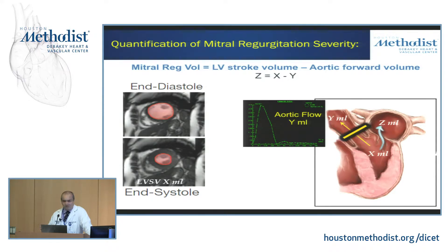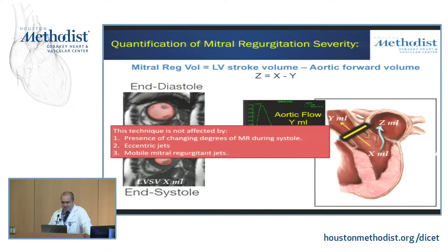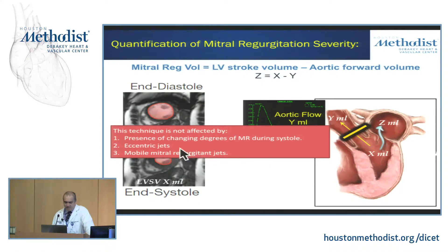The way we compute mitral regurgitation is simply: the amount of blood the ventricle ejects out minus the amount going forward equals the amount going backward. Obviously if there's an intracardiac shunt such as a VSD that complicates things, but in the absence of a shunt this is the basic methodology. This is the preferred way to assess mitral regurgitation. The advantage is that since it's purely volumetric-based, it doesn't matter if the degree of mitral regurgitation changes throughout the cardiac cycle, if the jet is very eccentric, or if you've got multiple jets — it gives you an integral of the total volume of reverse flow.